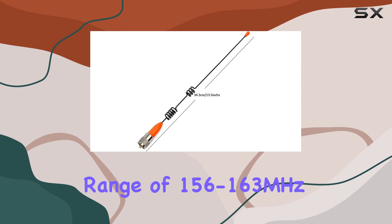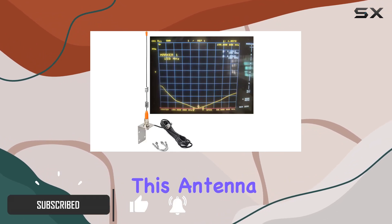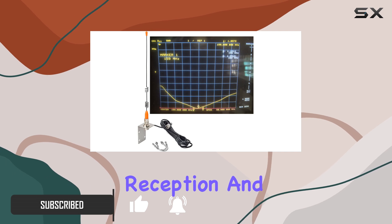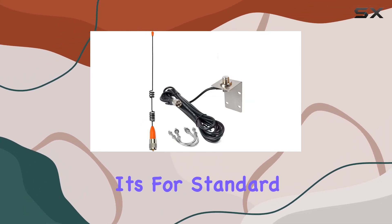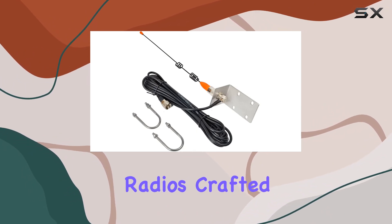With a frequency range of 156 to 163 MHz, this antenna ensures crystal-clear reception and transmission for your marine devices, whether it's for Standard Horizon, Cobra, or ICOM VHF Marine mobile radios.